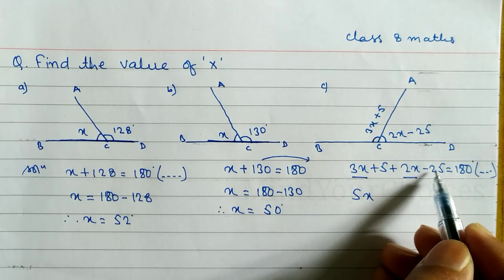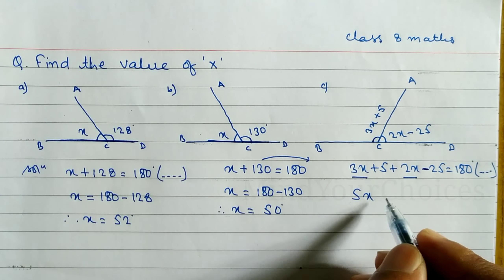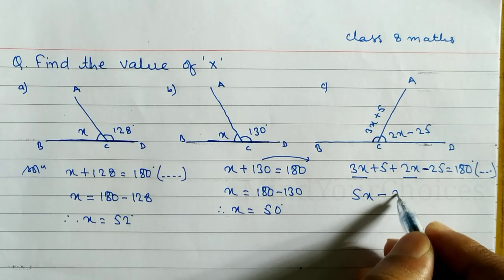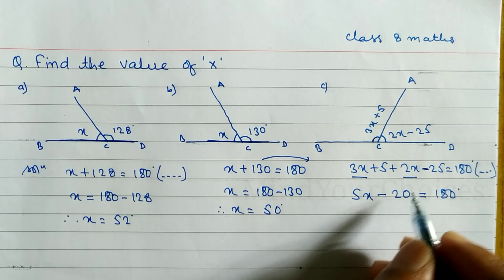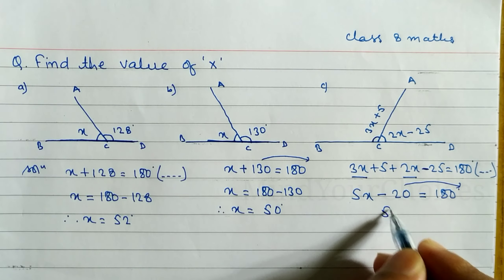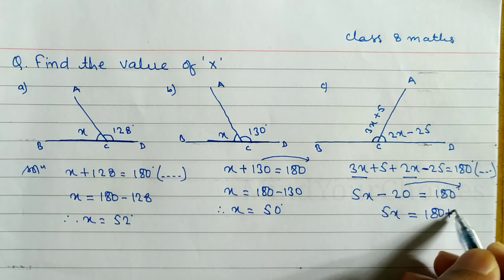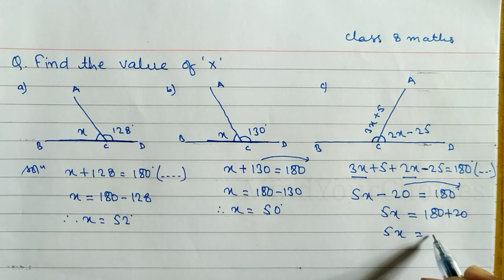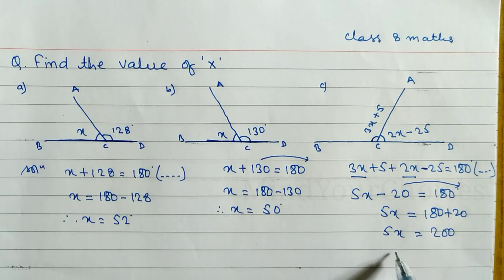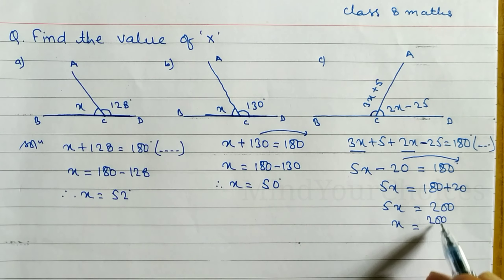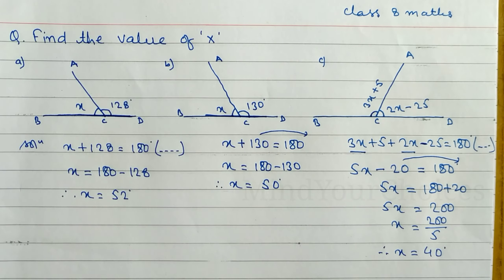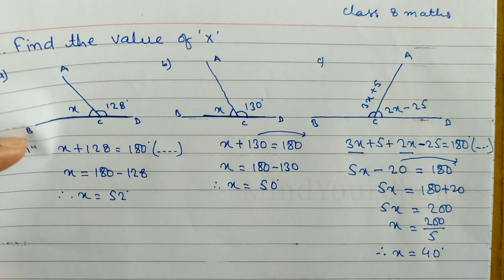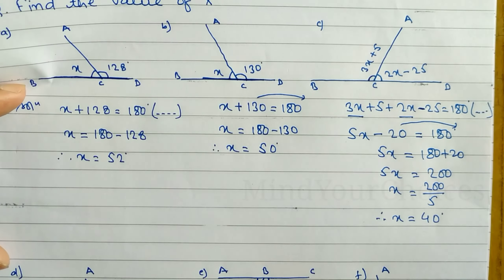For the constant terms: plus 5 minus 25 gives minus 20. So we have 5x minus 20 equals 180. Taking 20 to the right side, 5x equals 180 plus 20, which is 200. Dividing both sides by 5, the value of x equals 40 degrees.